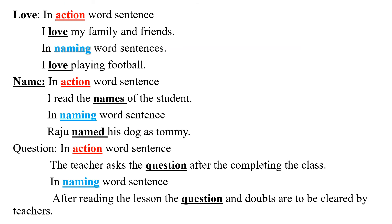'Love' as action word: 'I love my family and friends' — here the word 'love' indicates the action towards family. 'Love' as naming word: 'I love playing football' — here 'love' indicates the name of an activity. 'Name' as action word: 'I read the names of the students.' 'Name' as naming word: 'Raju named his dog Tommy' — here 'named' is in noun form as it is the name of a dog.